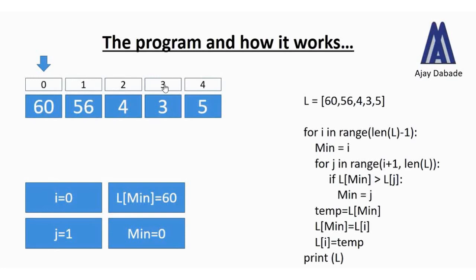The outermost i loop runs from 0 to 3. This is because we always check with the next number — when we are at position 3, we check it with position 4, so we run till the second-last position. We use a variable called min and assign the value of i to min. The innermost j loop starts from i plus 1, because we compare values with the next value.